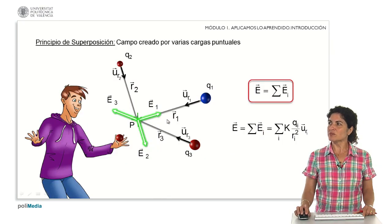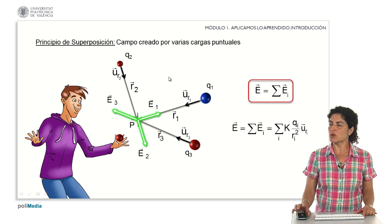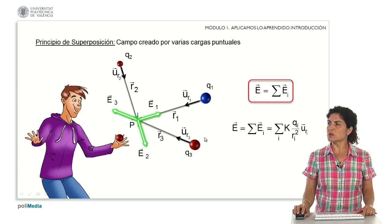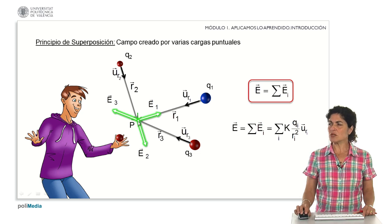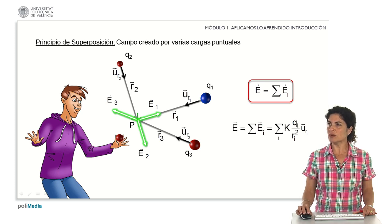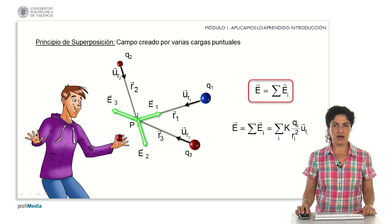Taking into account all that we have seen, when I have different charges in space, in this example that we can analyze from the theoretical point of view, we have only three charged particles, two of them positive and one negative. We analyze the effect that is going to be produced on a problem point P in space, where J is interested in knowing its properties to place a fourth charge.